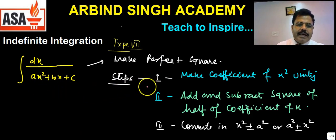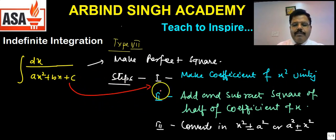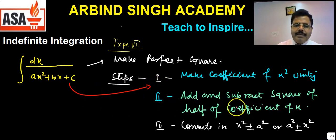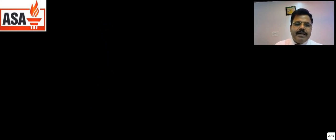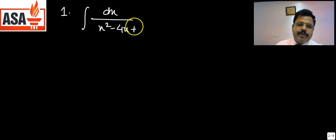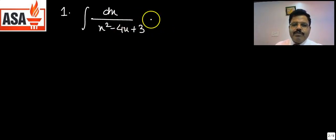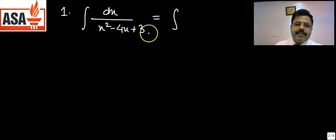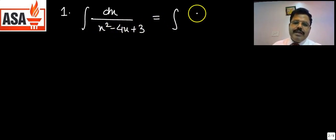Let's discuss some questions. For the first question — dx upon x² minus 4x plus 3 — we need to make a perfect square. First, make the coefficient of x² unity. Here it is already 1, so the first step is already done.